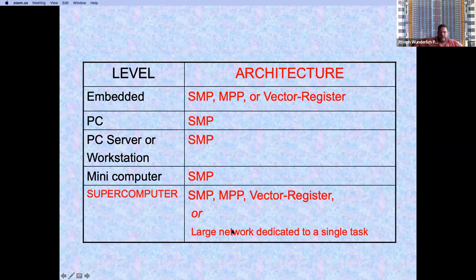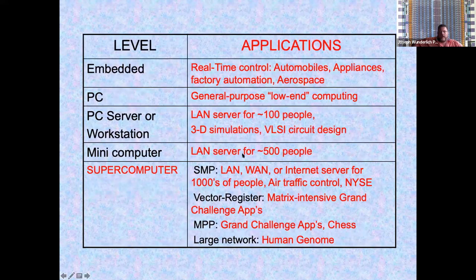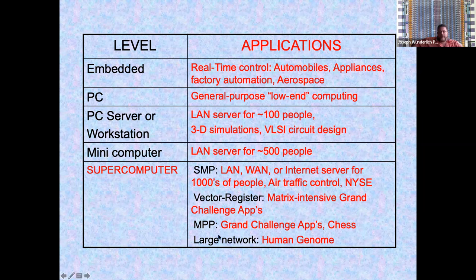Applications for embedded systems include real-time control: automobiles, appliances, factory automation, aerospace, and defense. A general PC is for everything everyone knows. A PC server or workstation is a beefed-up PC that can work as a server with more powerful graphics. Minicomputers are a smaller-scale version of larger SMP machines. The supercomputer — with vector register, MPP, and large networks — is the focus of this class, highlighted in bold and red.